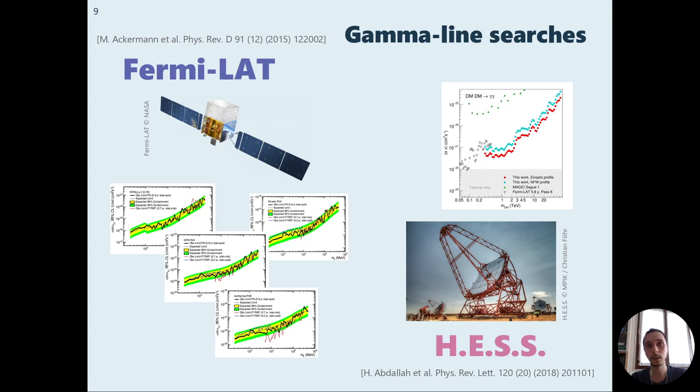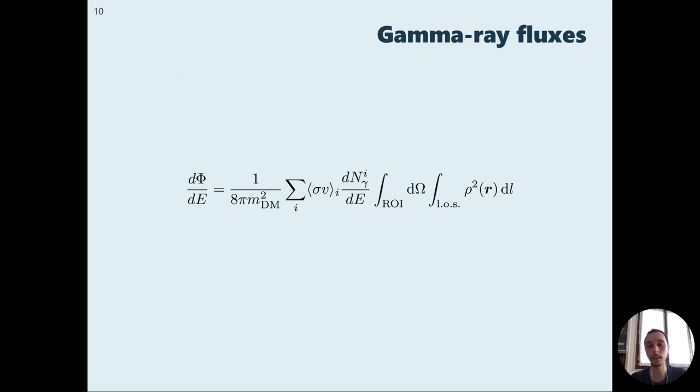There are several searches on the gamma line signature. The main ones are from the Fermi-LAT satellite and the HESS telescope. They have observed the galactic center and they have placed upper limits on the annihilation cross-section. These experiments are studying the flux of gamma rays. This is the main formula for the computation of the flux.